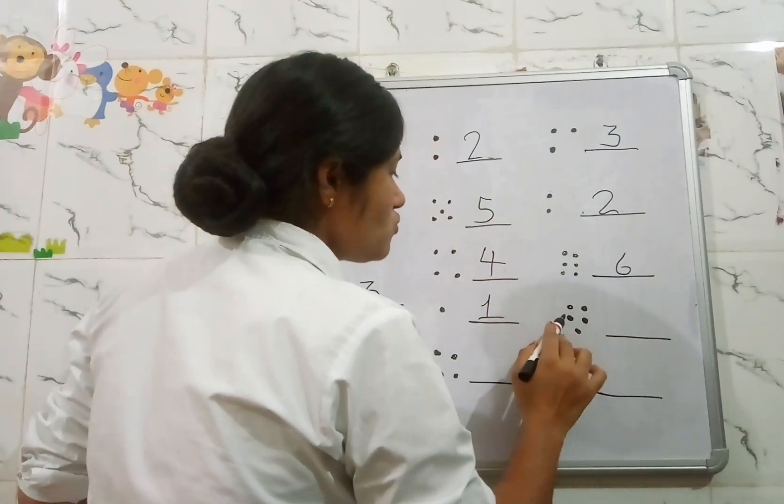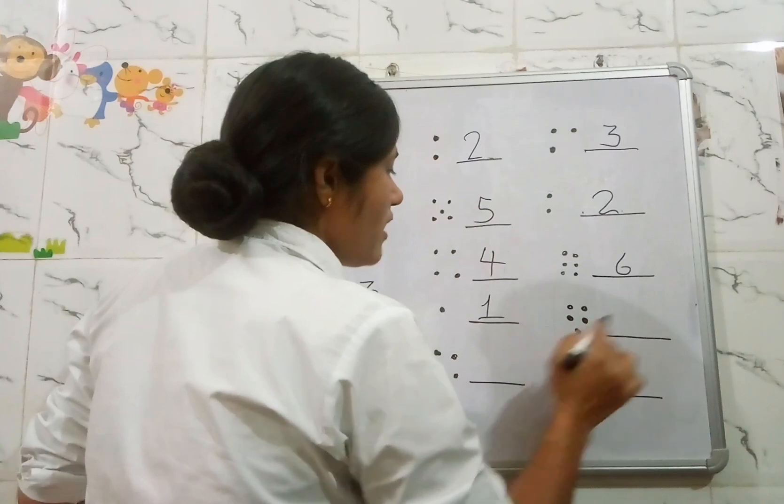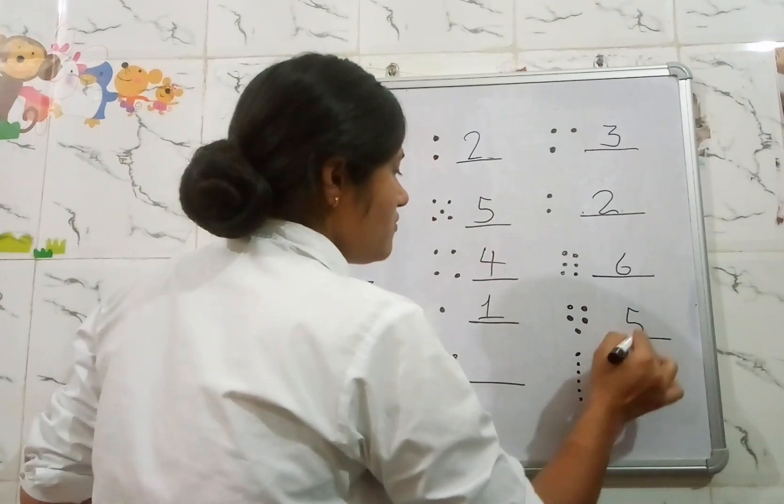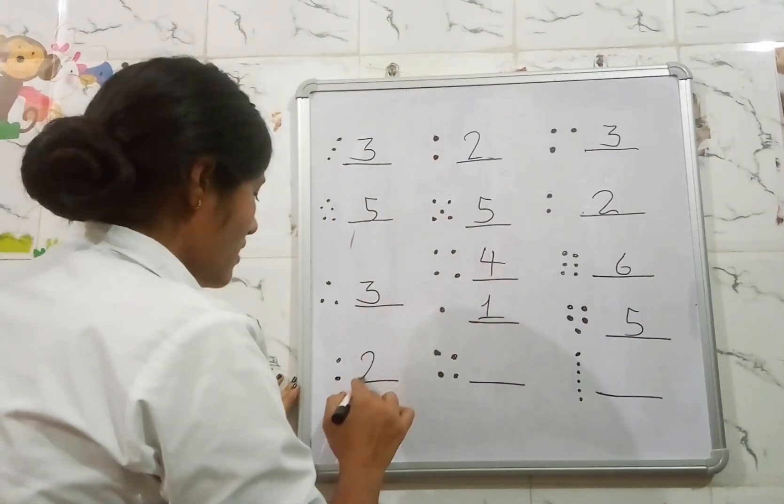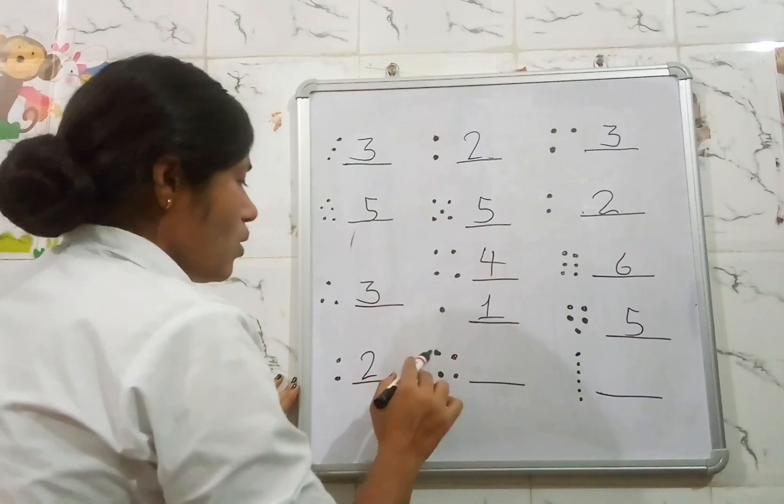1, 2, 3, 4, 5. That's 5. We will write here 5. Now count: 1, 2. Write here 2.